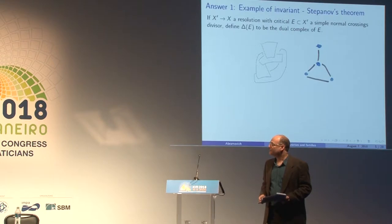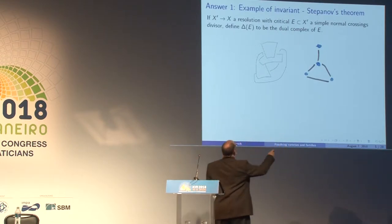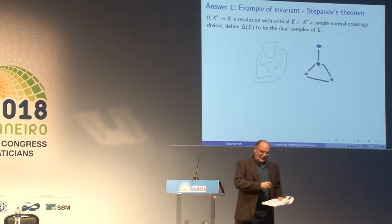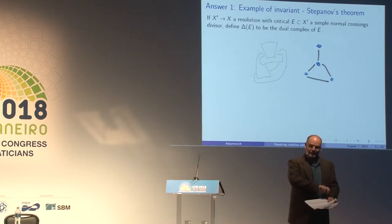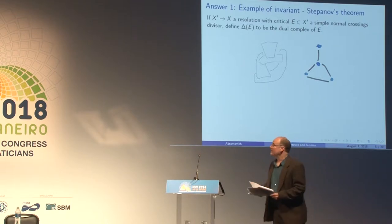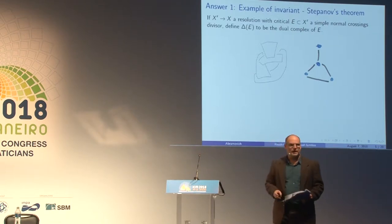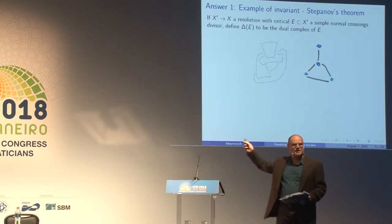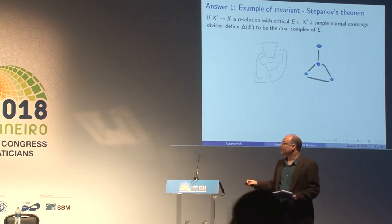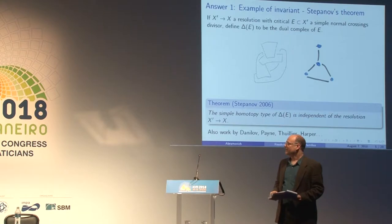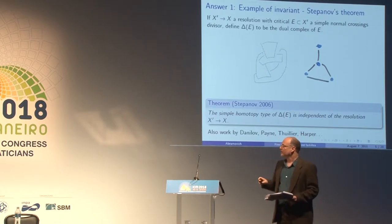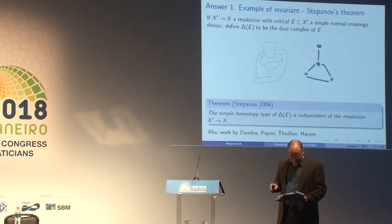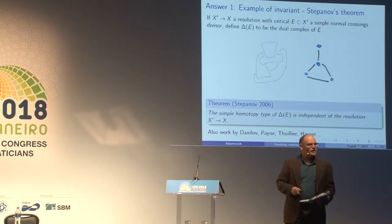If three components were to meet in one point you would fill in a triangle, and if you had two points where they meet you would get a pillowcase shape. So you have a very simple geometry attached to a singularity. There's a wonderful theorem — certainly Stepanov proved it — that the simple, piecewise linear homotopy type of this complex is independent of the choice of the resolution. So that homotopy type is an invariant of the singularity.